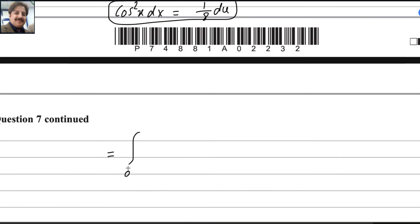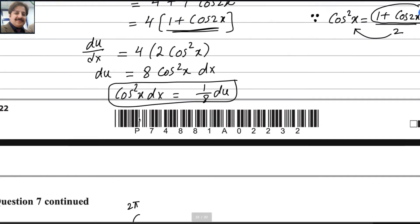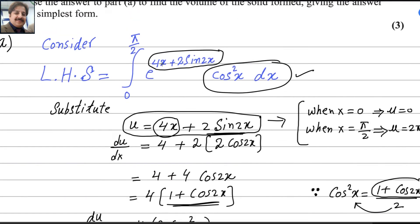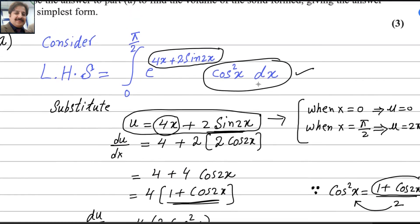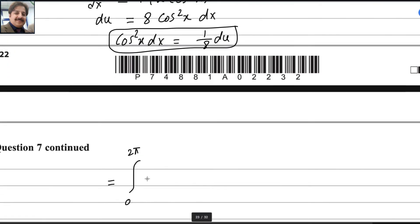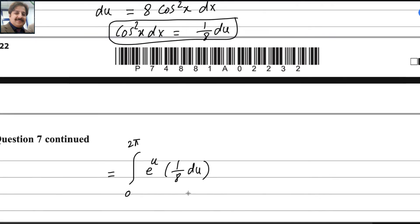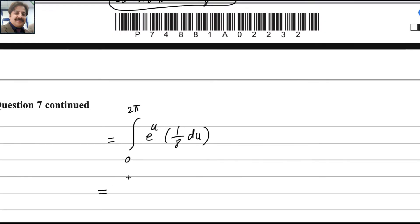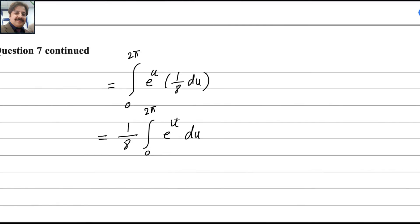Now our limit is from 0 to 2π. The left hand side is e to the power u, and we already got that value: 1/8 du. So it will be e to the power u times 1/8 du. You can take out the constant number, 1/8. Integration of e to the power u, when you are integrating with respect to u, the answer will be the same. So it will be 1/8 e to the power u.